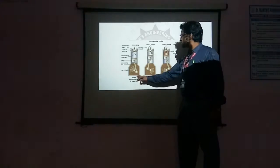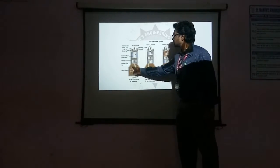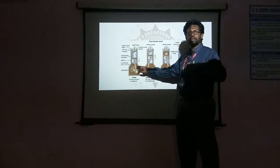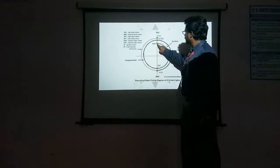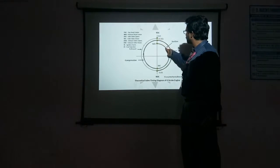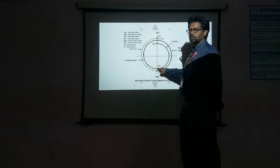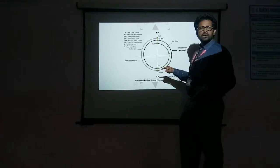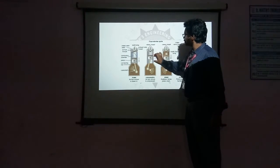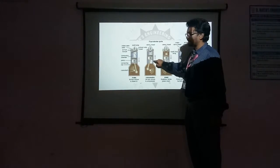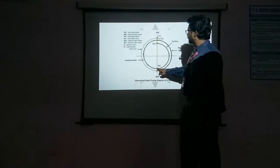One complete cycle comprises these four strokes: intake, compression, power, and exhaust. The crank completes two revolutions, and in the valve timing diagram the crank movement is used to represent the position of the valves. In the second stroke — the compression stroke — the crank is moving from BDC to TDC, meaning the piston is moving from BDC to TDC. The same thing is represented on the valve timing diagram.